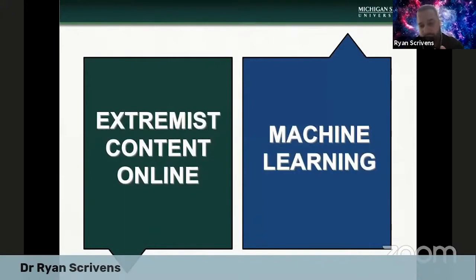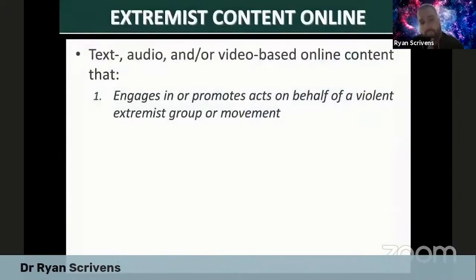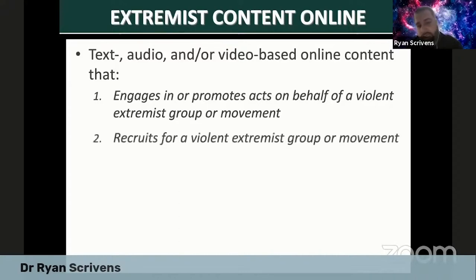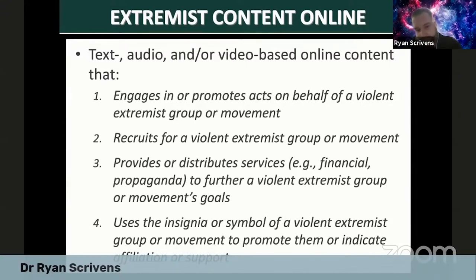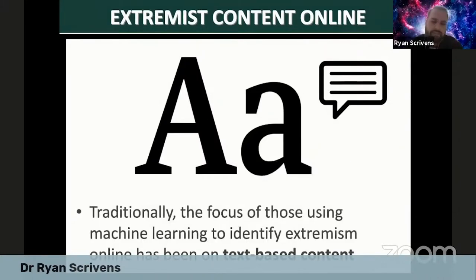First, a couple of housekeeping items. I'm going to define my understanding of what guides the research I do around machine learning tools or techniques to identify signs of extremism online. I'm guided by the view that extremist content online can be text, audio, or video based materials that either engage in or promote acts on behalf of a violent extremist group or movement, recruits for such a group, provides or distributes services such as financial or propaganda, or uses symbols to promote them or indicate affiliation. Traditionally, machine learning tools have been focused on text-based content, which is the focus of my talk today.